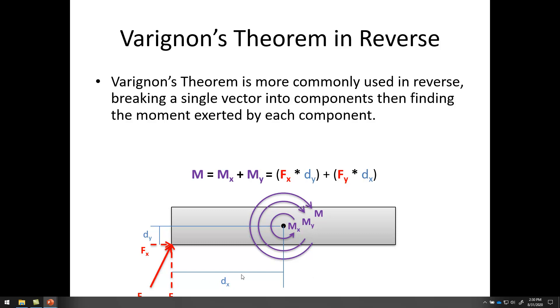So this would be the moment of the y component, Fy times dx. So Fx times dy plus Fy times dx. That gives me the moment of the x component, the moment of the y component. Add those two pieces together to find the overall moment.